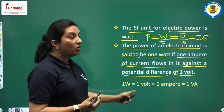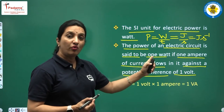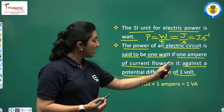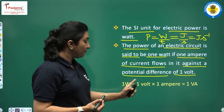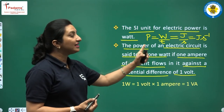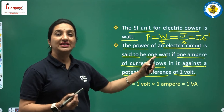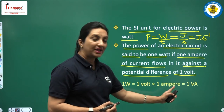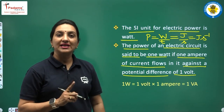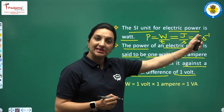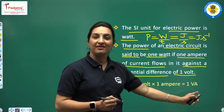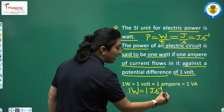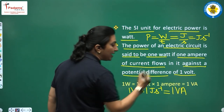We have one more definition of watt: if 1 ampere of current flows against a potential difference of 1 volt, then 1 watt of power is said to be there in the electrical circuit. So 1 watt equals 1 volt times 1 ampere, that is 1 volt-ampere. Therefore, 1 watt = 1 joule per second = 1 volt-ampere.